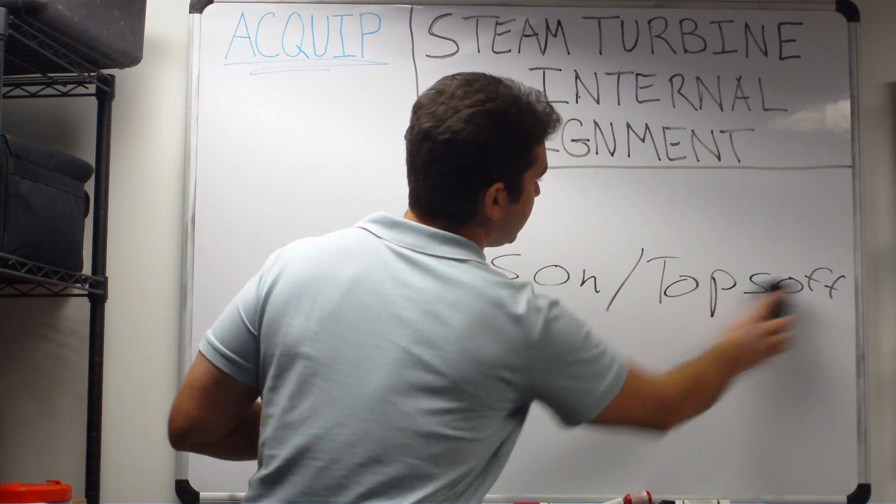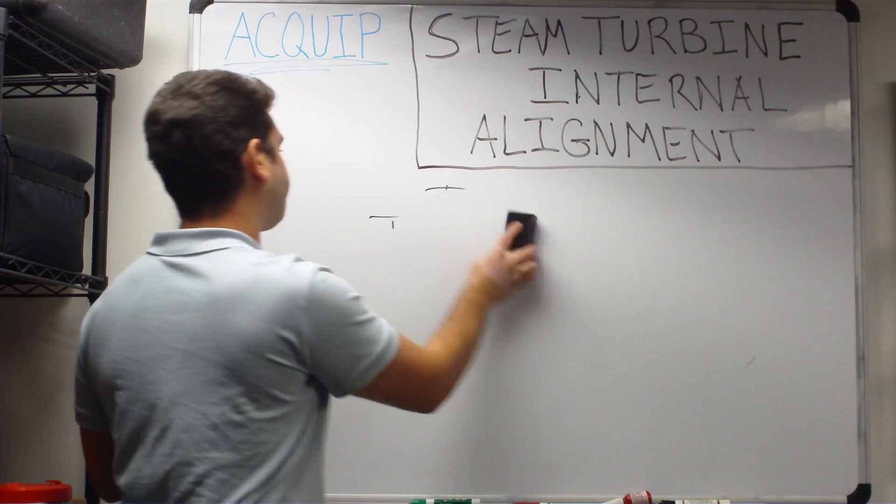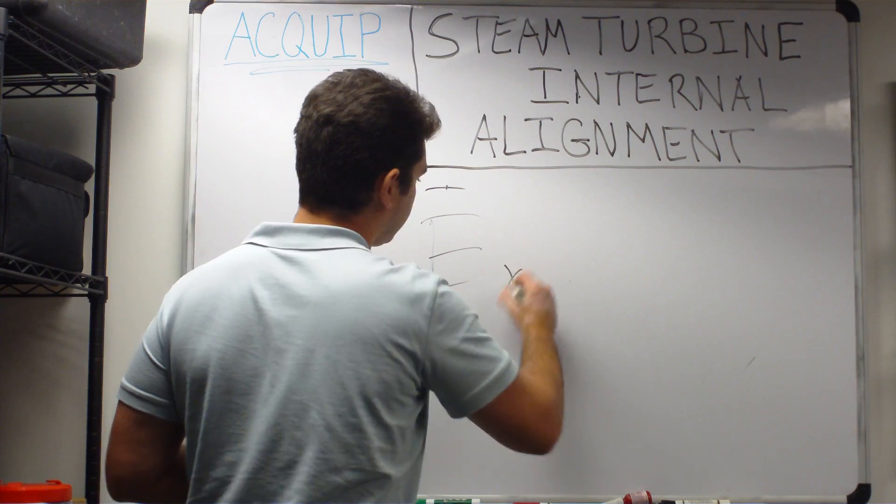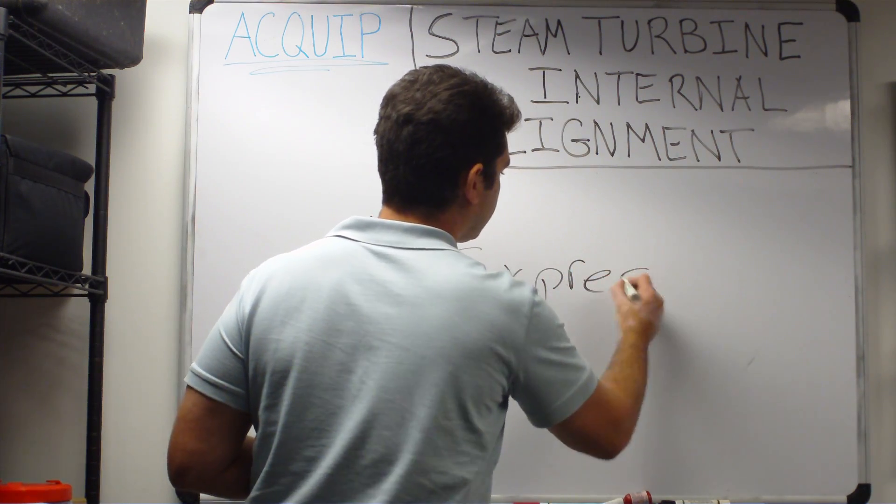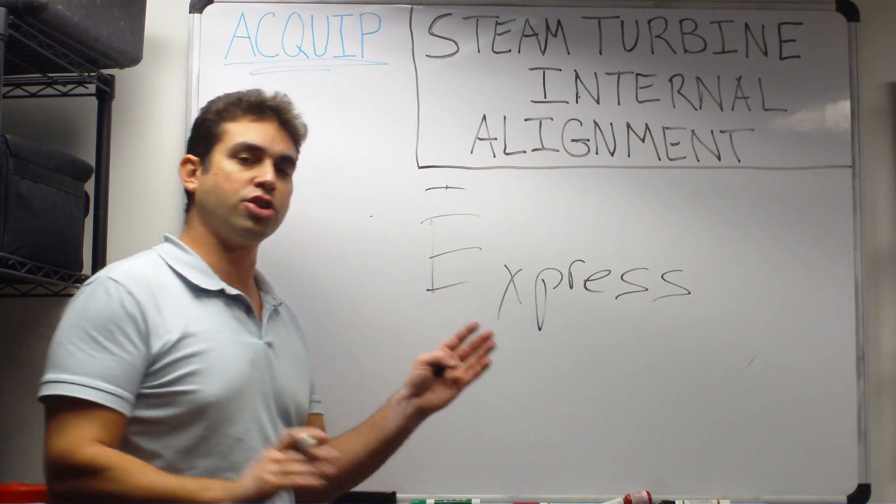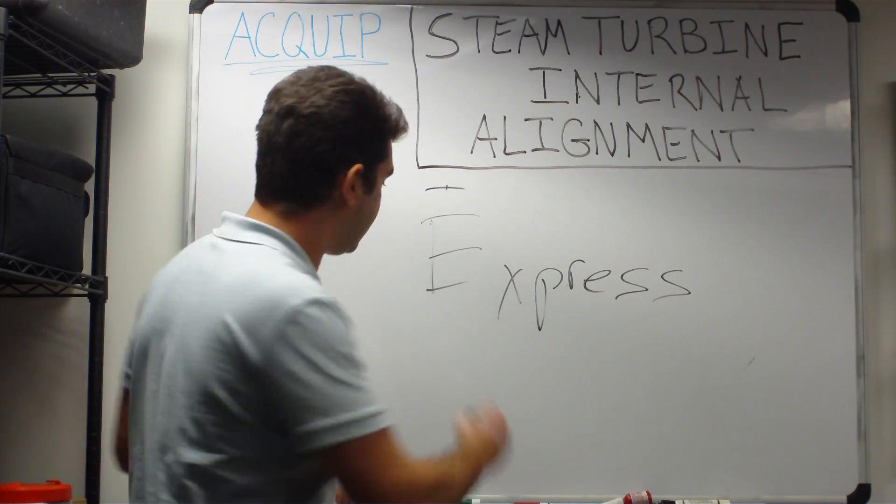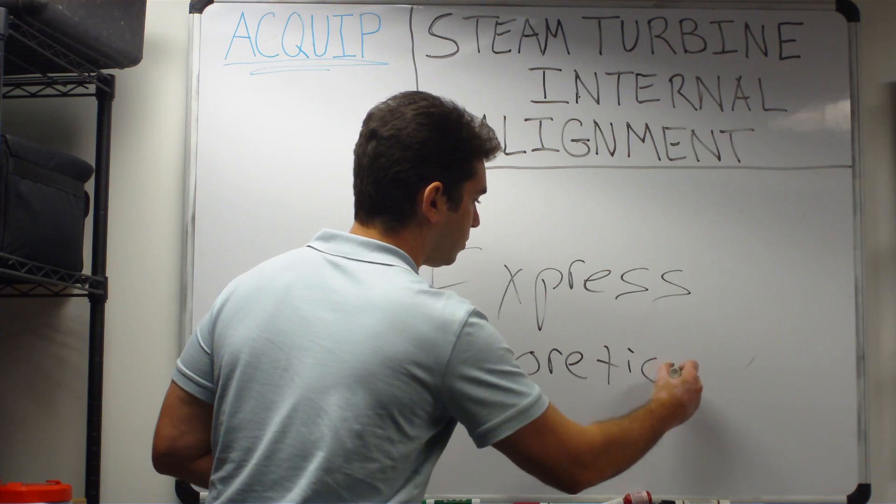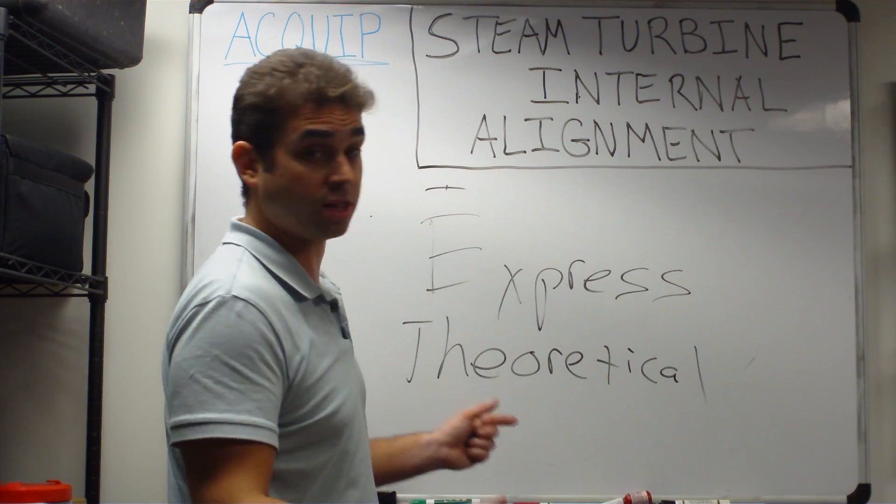The next type of alignment that we're going to talk about is an express alignment. Another good name for an express alignment is a theoretical tops-on alignment,